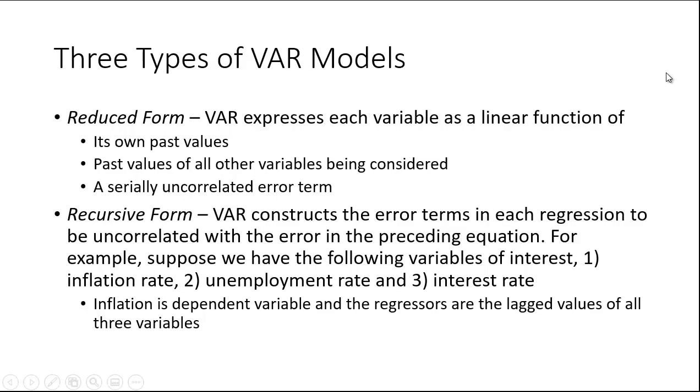There are three types of VAR models. The reduced form model: VAR expresses each variable as a linear function of its own past values, past values of all other variables being considered, and a serially uncorrelated error term. This is the simplest model.